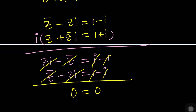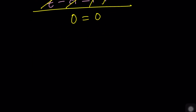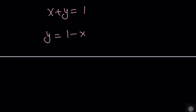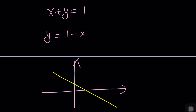In the Argand plane, this represents a locus. Using Z equals x plus yi instead of A plus Bi, we found x plus y equals 1, which means y equals 1 minus x. That's a line with a slope of negative 1. So all solutions to this equation lie on this line, making it a locus problem.